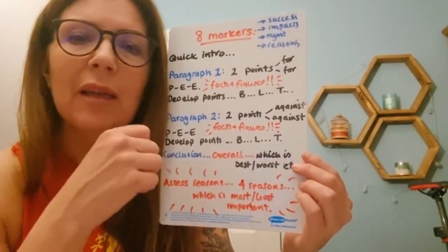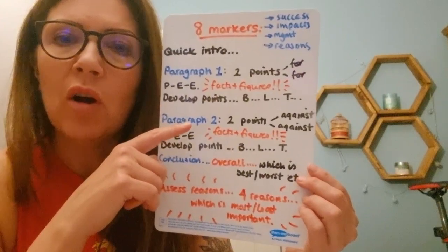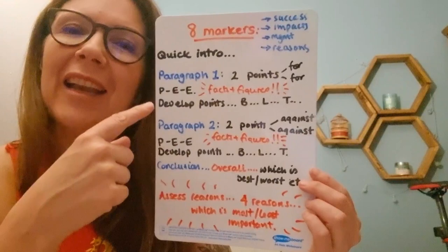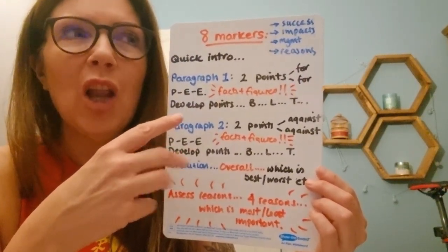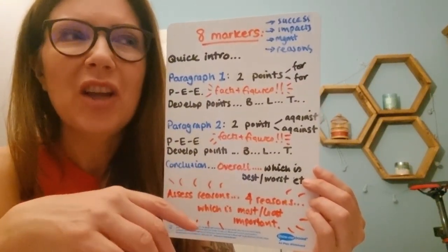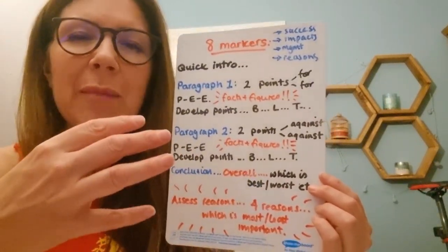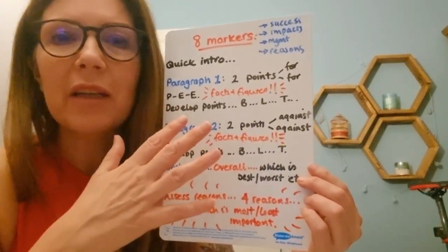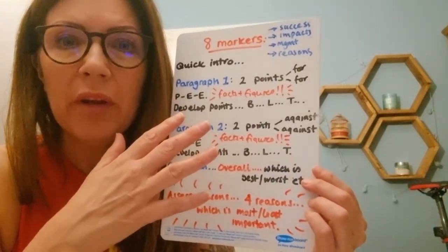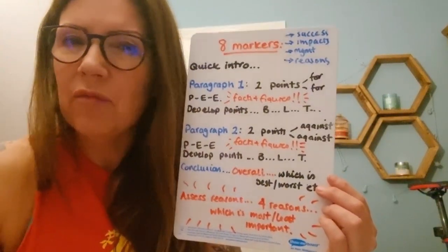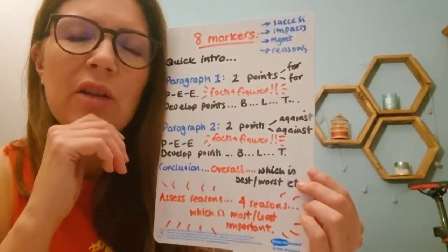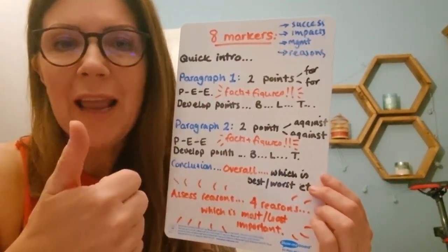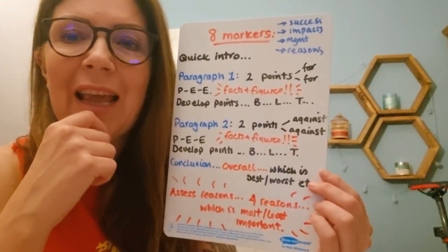So that's just a really quick way to structure your eight markers. Now, if you're doing 12 markers at a level or 20 markers at a level, you can kind of use the same structure, but you'll use a lot more sophisticated language. You'll develop your points even further. And if it's 20 mark, you'll probably stick in an extra two points. But if it's a 12 markers, to be honest, for a level, probably going to really use four points, the same two, four, two against, but really, really develop them. And if you're thinking that you're not, you haven't developed one or two that well, we'll stick another one in. So this format can be used for eight marker, 12 marker, 20 marker at GCSE and a level.